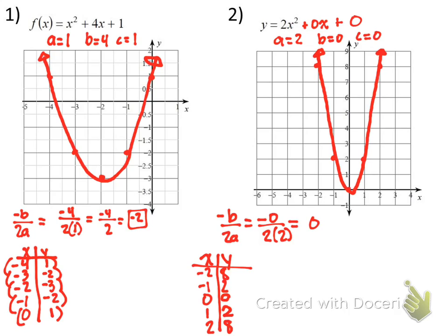Those are the steps — the easiest way to graph a quadratic is by making a table. With your partner, pick one problem that makes sense between the two of you and try to explain to each other the steps for graphing a quadratic. Ready, set, go.